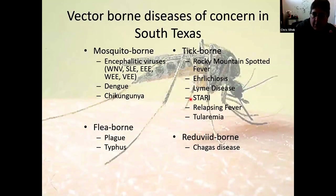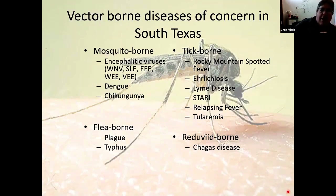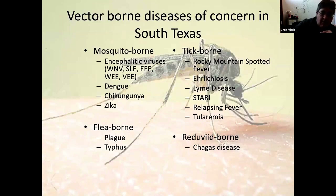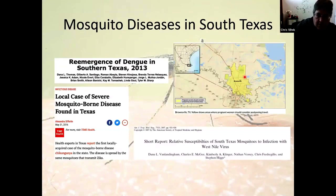We have a lot of vector-borne disease concerns down here in South Texas. Not all are mosquito-borne — we have some tick-borne and flea-borne diseases. This area is actually one of the primary areas where we see murine typhus or flea-borne typhus. We have Chagas disease, transmitted by a triatomine bug. In my lab, we focus on mosquito-borne diseases. Recently we've added Zika to our list of concerns. We do see cases of dengue in South Texas, have had local transmission of chikungunya, have West Nile virus, and Brownsville was identified by the CDC as a high-risk zone for Zika transmission.